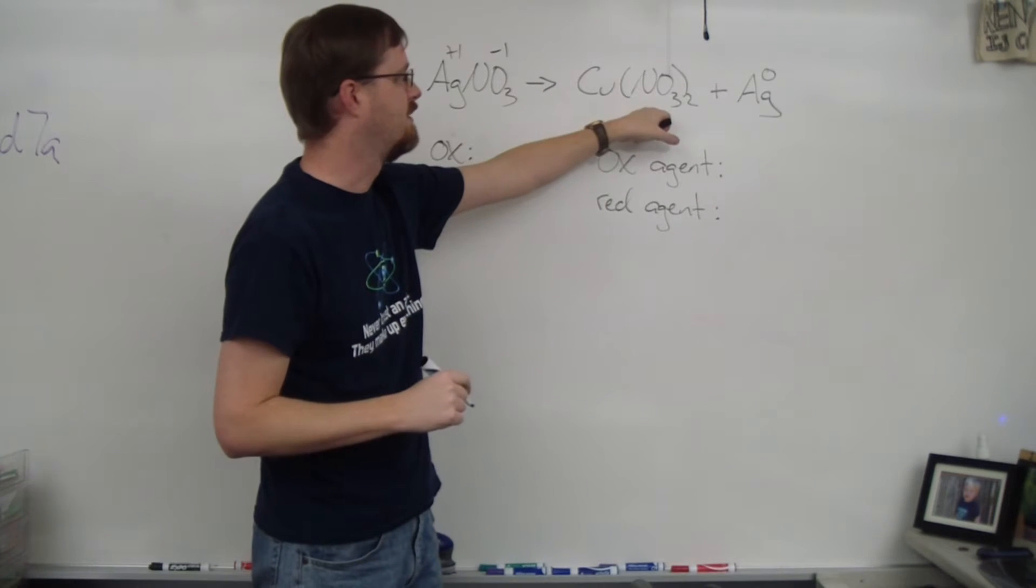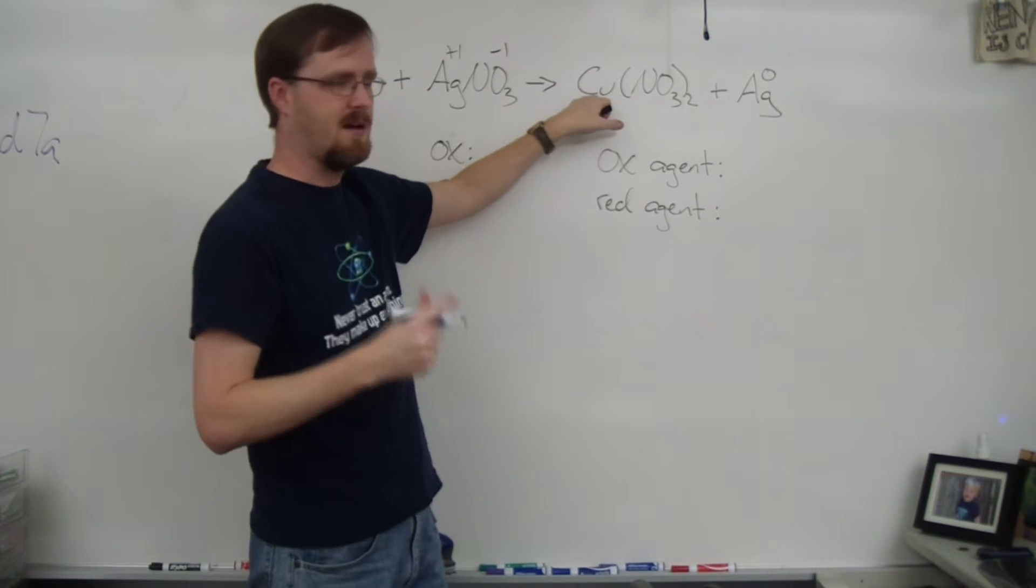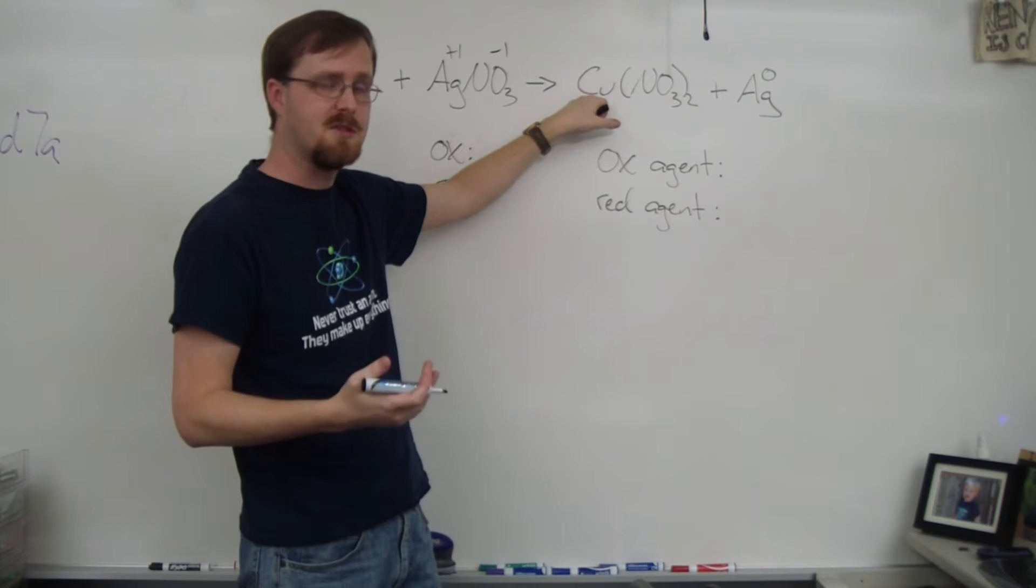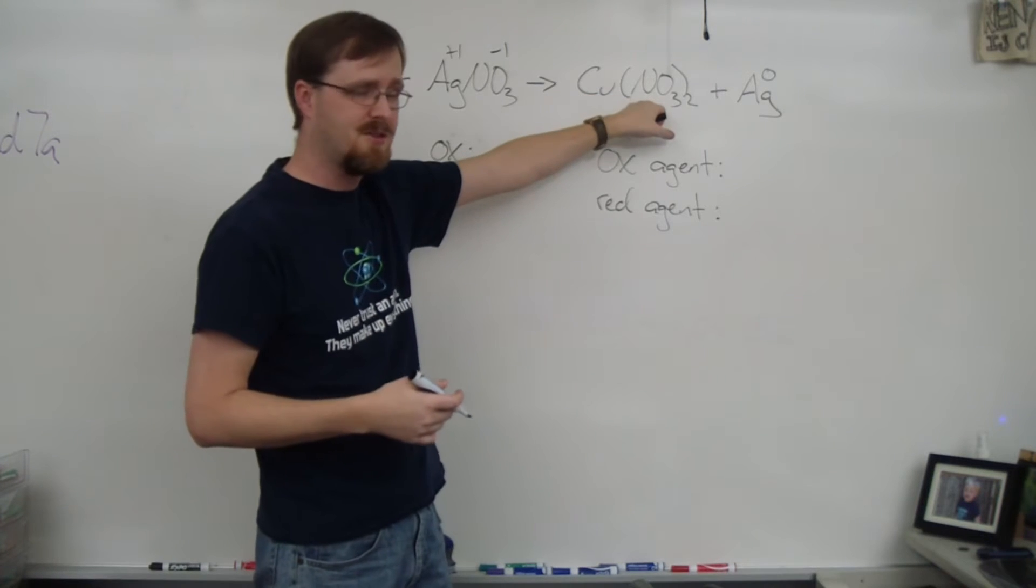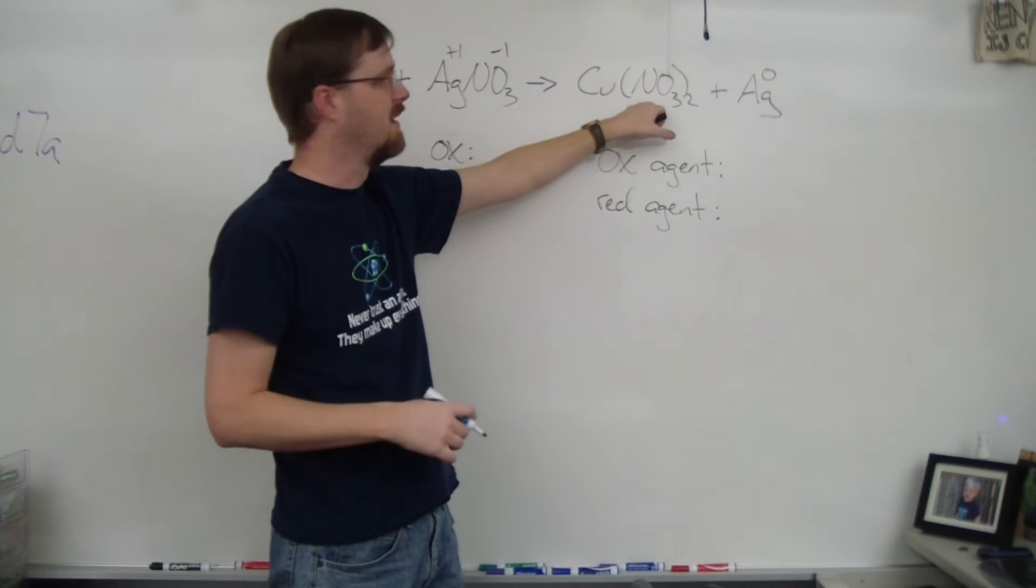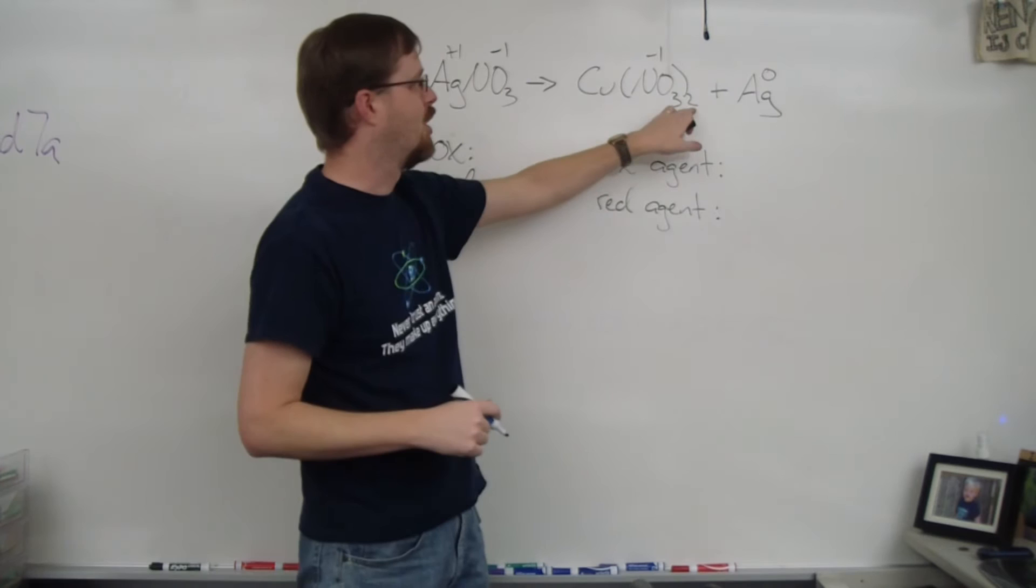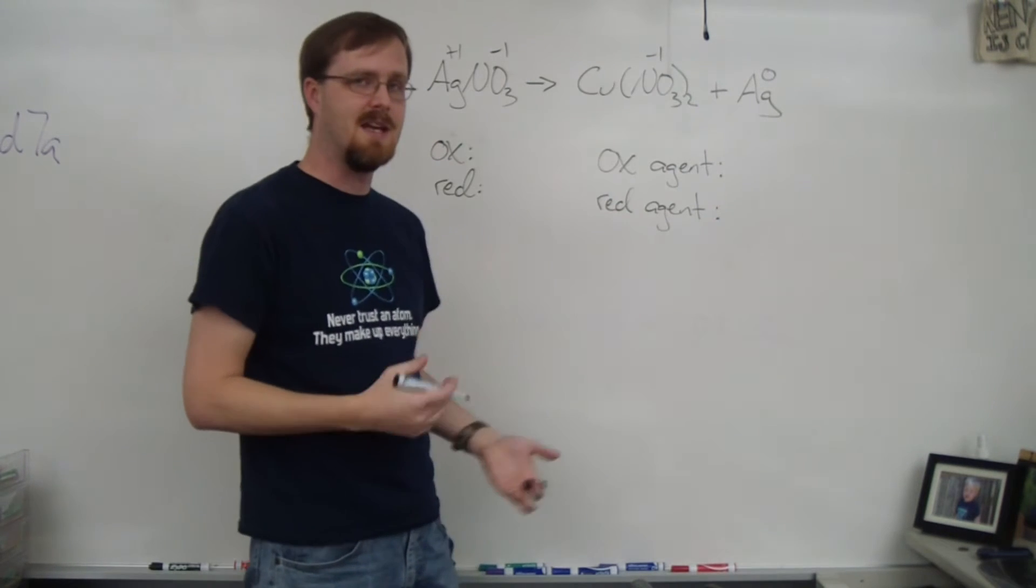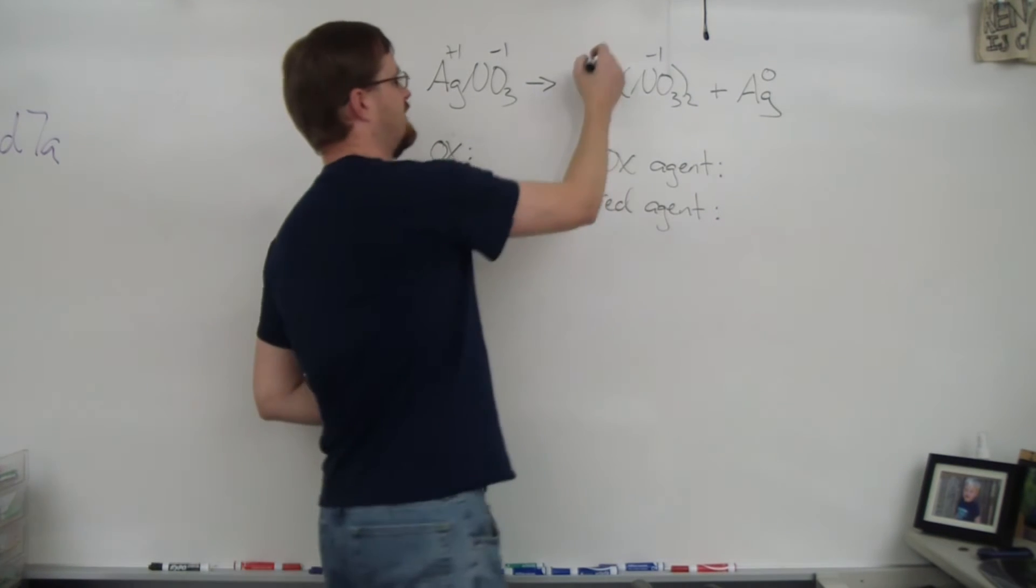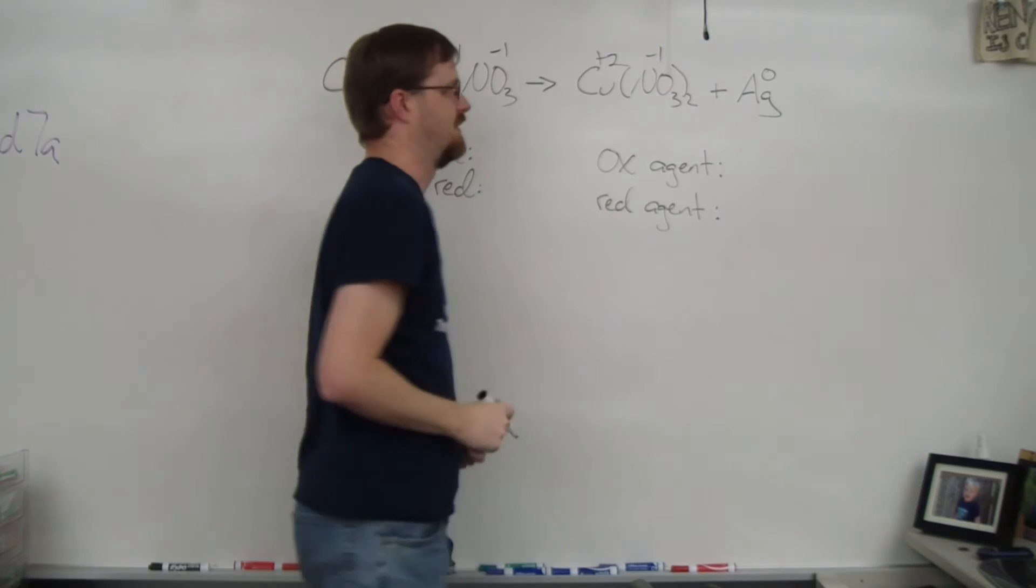Over here to copper(II) nitrate. Again, copper is a transition metal, so I'm going to start with our negative ion. It's nitrate, so that's -1. But since there are two nitrates, overall that's -2, so copper must be +2.